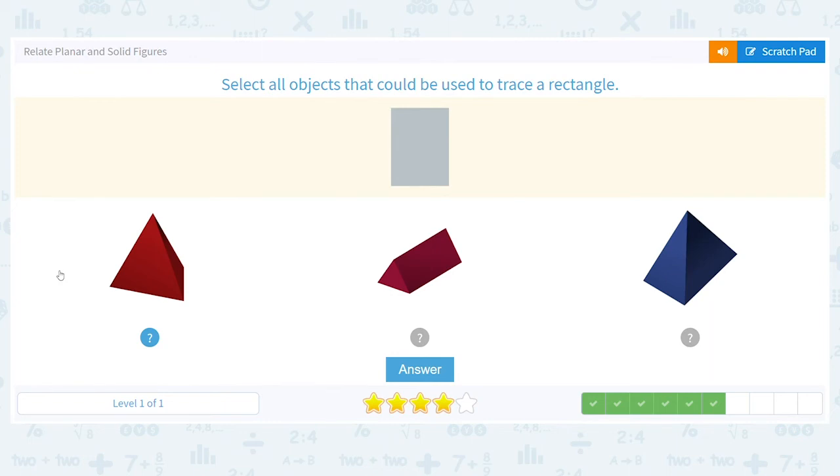If you get stuck on one, skip that object and come back to it. For example, this one might be a little bit of a challenge. I'm going to go to the next one. I see a rectangle right on there. So I know that's going to work.